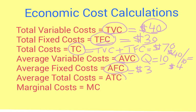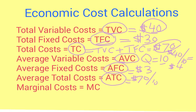Average total cost is simply total cost divided by the number of products we make. We're making 10 products and our total cost is $70, so average total cost is 70 divided by 10, which equals $7 per product.